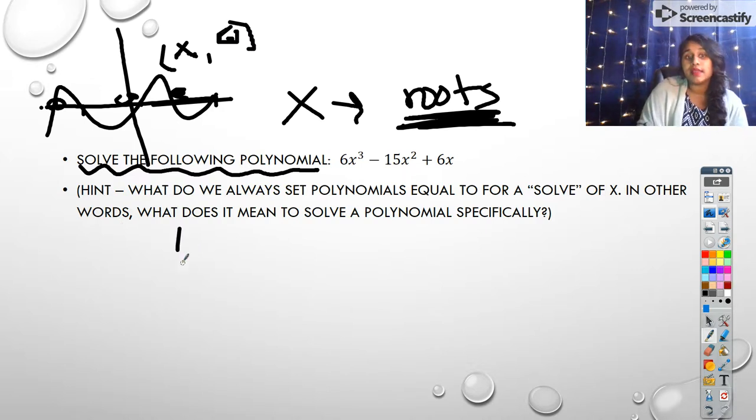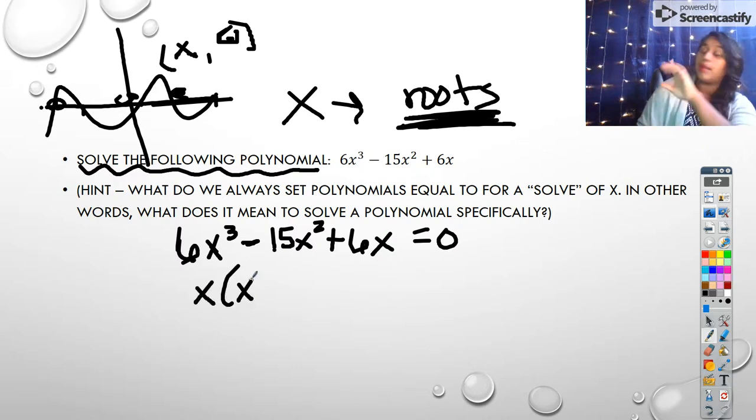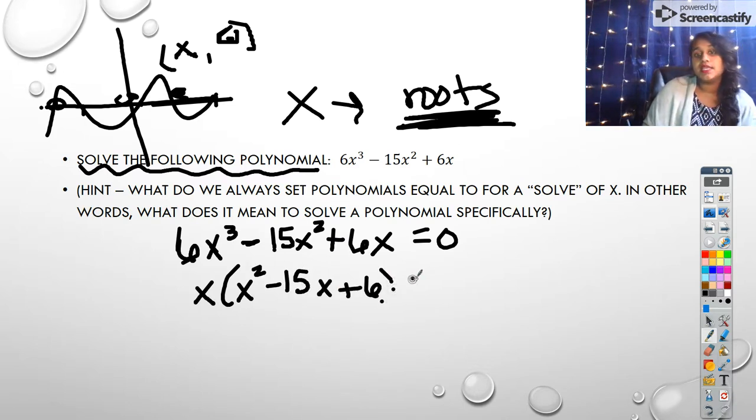So when we solve for a polynomial, we know that we are always setting our polynomial equal to 0. The only time we're not is when we're given more information to go for it. Otherwise, if we see solve, we know that we're pretty much solving for those roots. So I'm going to set this equal to 0. The very first thing I can do is I can pull out a common factor term. And that's going to be x squared minus 15x plus 6 equals 0.